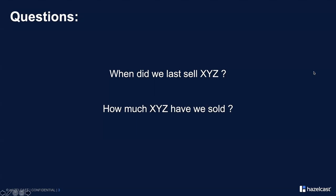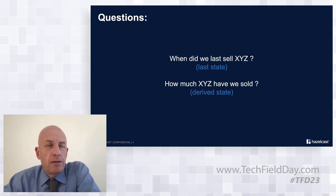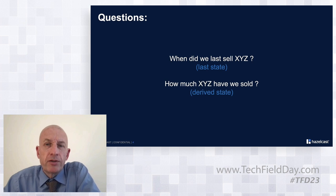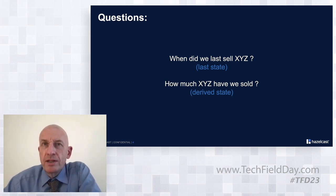Continuous querying addresses the kinds of questions people want to know in any trading platform: when did we last sell something, and how much have we sold today? The first is a last-state question, which can be satisfied from data storage in a data grid. The second is a derived-state question, which comes from stream processing.